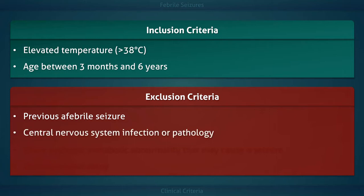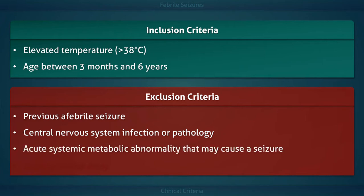Central Nervous System Infection or Pathology: it is vital to rule out any disease of the central nervous system before concluding that the child had a febrile seizure. Acute Systemic Metabolic Abnormality: a variety of acute metabolic derangements can cause a seizure, such as an abnormal serum sodium or glucose concentration.